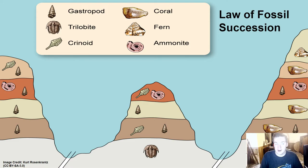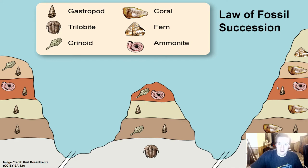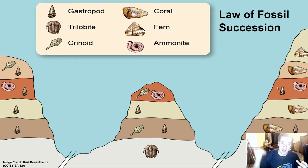An index fossil lets you say, for example, that an outcrop in North America, one in Africa, and one in Australia all share the same orange layer. If you find an ammonite fossil only in that orange layer, that's a great index fossil — you find it all over the world and only in that layer. So if you go somewhere else and find that same ammonite in an orange layer, you know the exact relative age of those rocks. Using the law of fossil succession, you can break down different rock units over geologic time and say this rock existed at a specific time because you find the fossil in it but not in layers below or above.